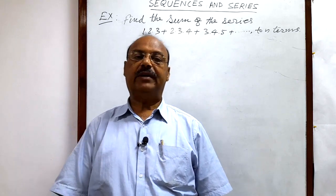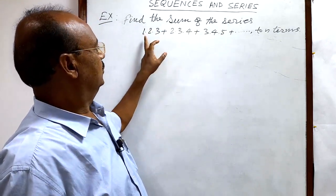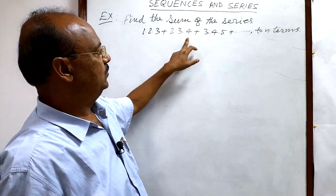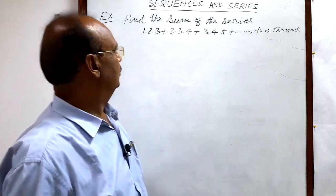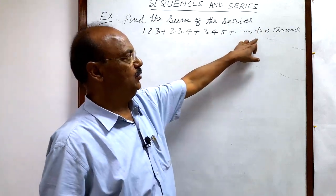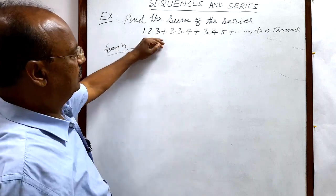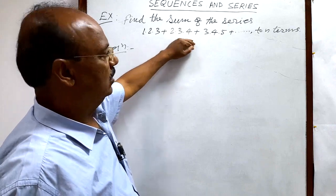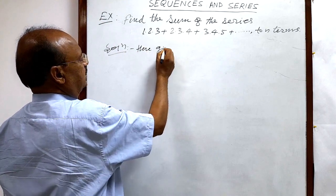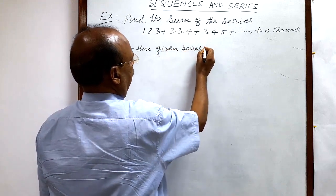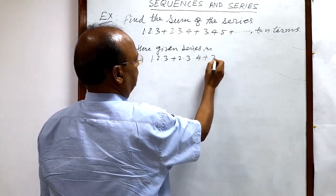Here we will see a very important question from the chapter Sequences and Series. The question is: find the sum of the series 1·2·3 + 2·3·4 + 3·4·5 + ... up to n terms. So we have to find the sum of this series up to n terms.